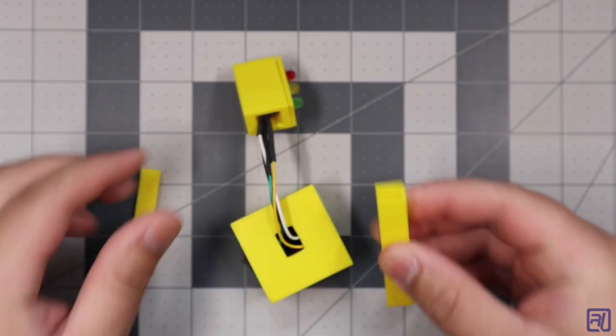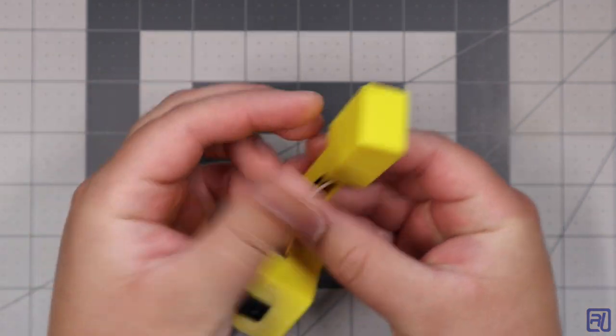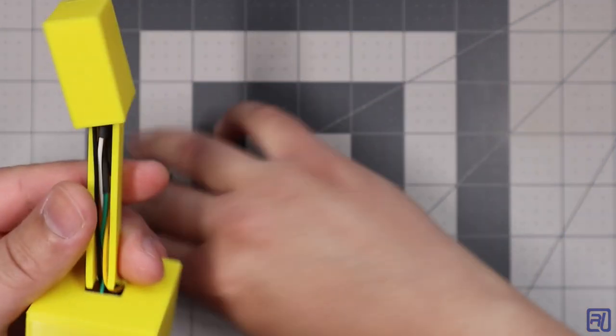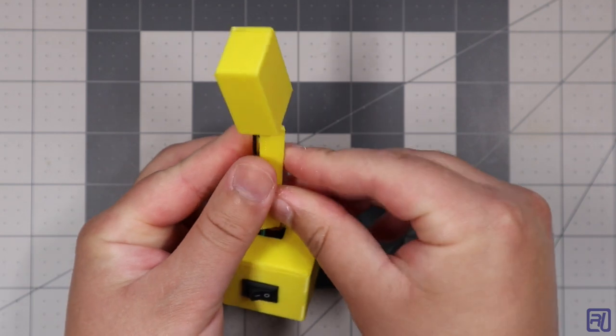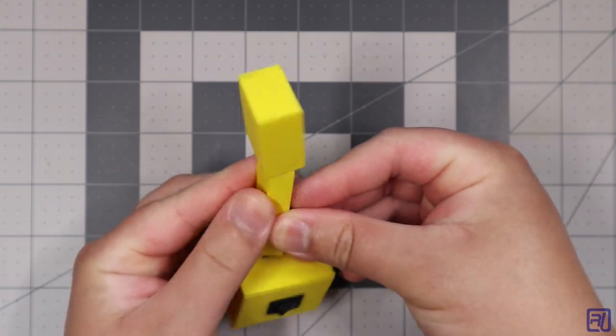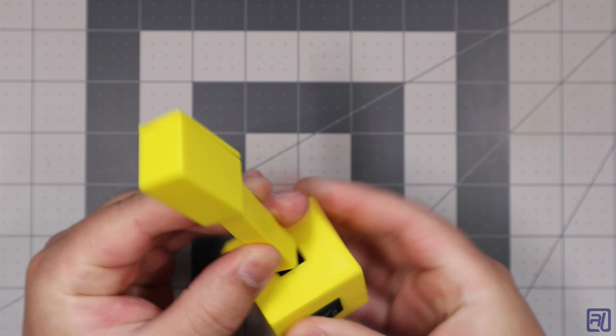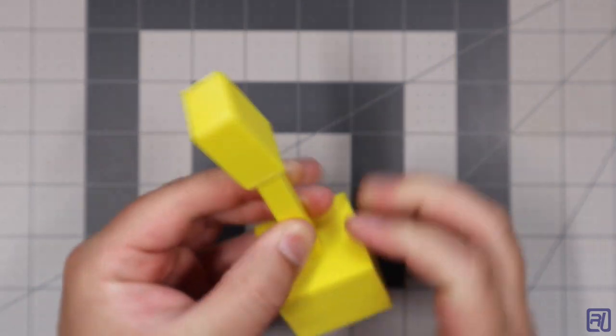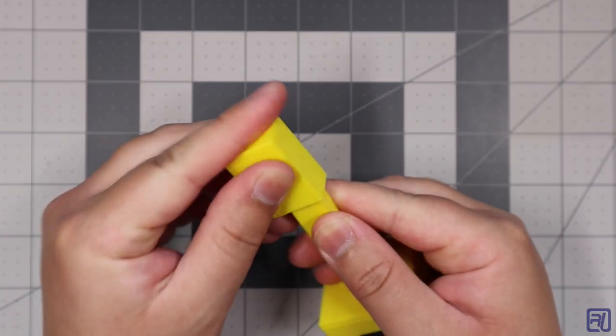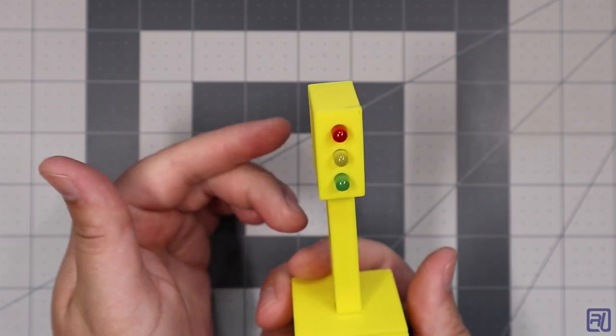So the way this all looks together is put the middle section, slide the wires, put the back plate on that. And then it snaps at base and at the top, there you go.